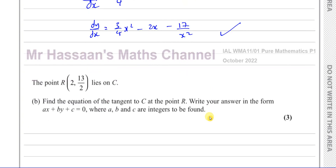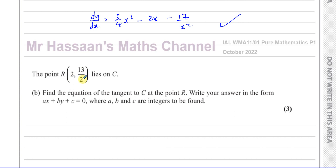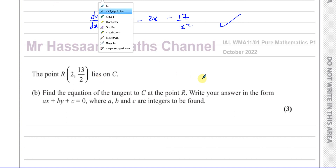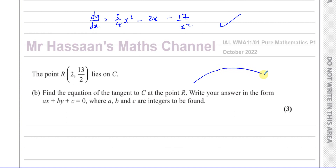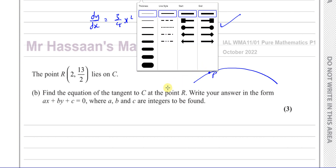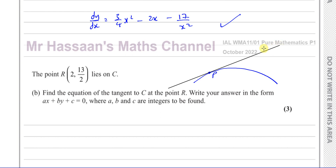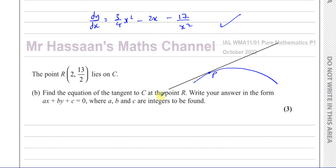For part B, the point R has coordinates (2, 13/2) and lies on curve C. We need to find the equation of the tangent to C at point R, written in the form Ax + By + C = 0. A tangent is a straight line that brushes the curve at a particular point and has the same gradient as the curve at that point. To find the equation of a straight line we need two things: a point on the line — we have point R — and the gradient of the tangent.